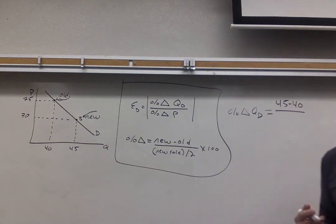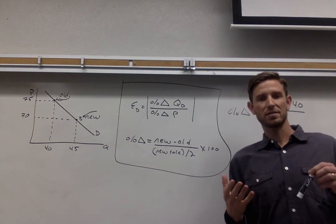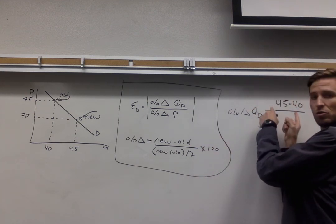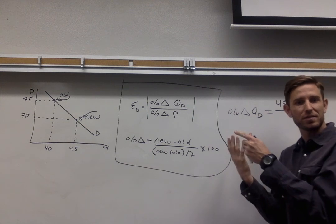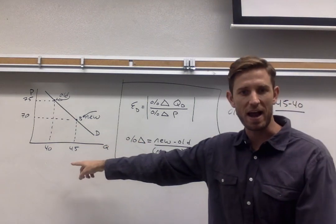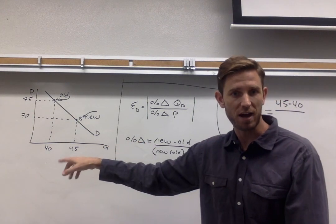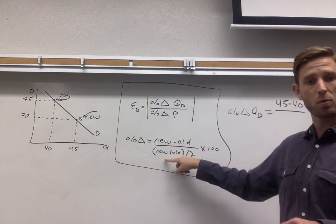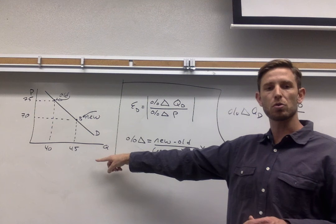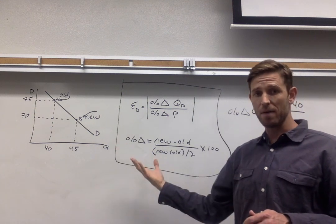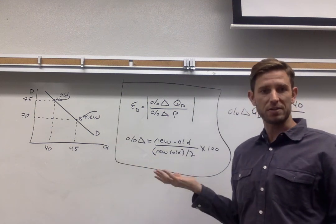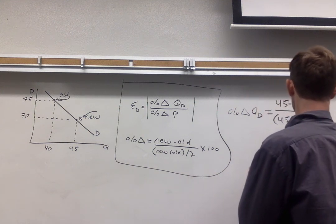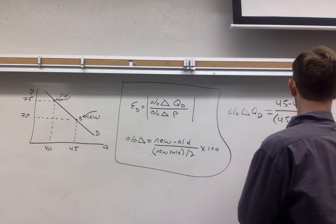Next in the denominator. This is the midpoint method of percentage change. So we're going to divide this by the midpoint of those two quantities, in other words the average. You can likely just eyeball that average just by looking at 40 and 45, but just to be totally thorough let's go ahead and use the formula. The way that we'll get the average between those two quantities is to add them up new plus old and then divide it by 2. So we're going to then have 45 plus 40 divided by 2.